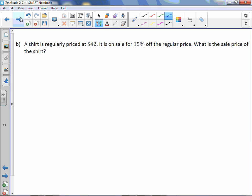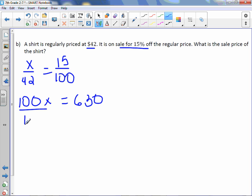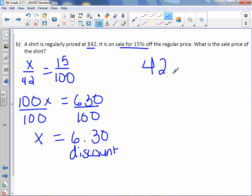Letter B. A shirt is regularly priced at $42. It is on sale for 15% off the regular price. What is the sale price of the shirt? We don't know the part. The total is $42. The percent off is 15 out of 100. Cross-multiply. 100X equals 630. Divide by 100. X equals $6.30, and this is the discount. So we take our price of $42 and subtract the discount of $6.30, and we get a sale price of $35.70.